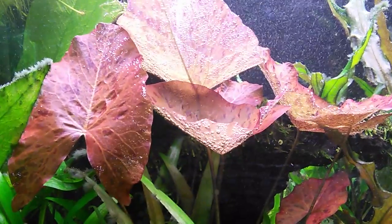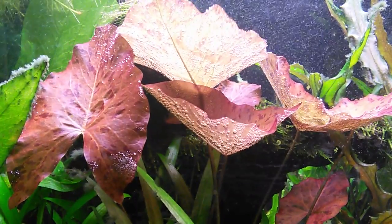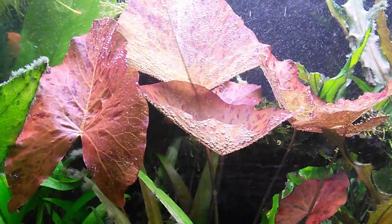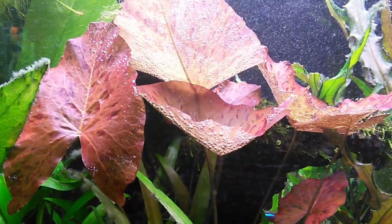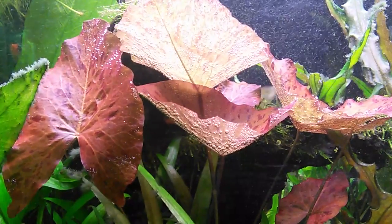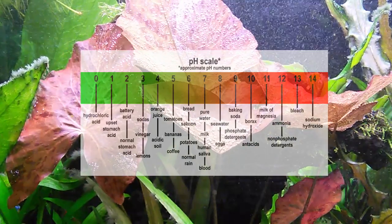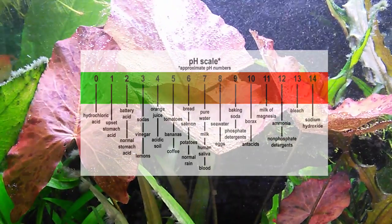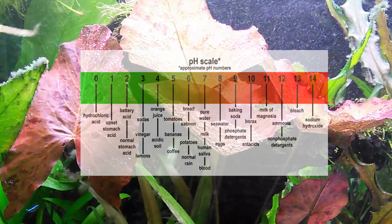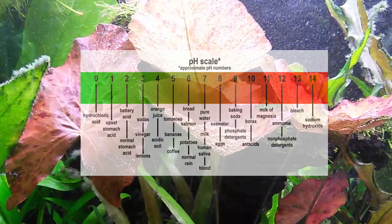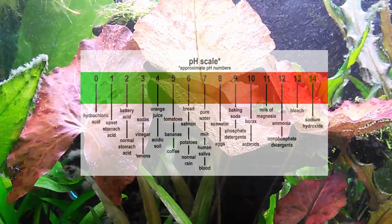Anytime there are more hydroxyl ions present than hydrogen ions, the water is said to be alkaline. Looking at the pH scale, anything above seven is alkaline and anything below seven is acidic. So if you keep African cichlids or saltwater fish, you want to be on the alkaline side — anywhere from 7.5 to 8.5. If you keep South American dwarf cichlids, angelfish, or discus, you probably want to be on the lower side, the 6.0 to 6.5 area, which is the acidic zone.